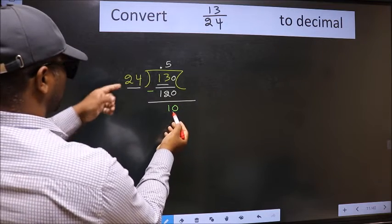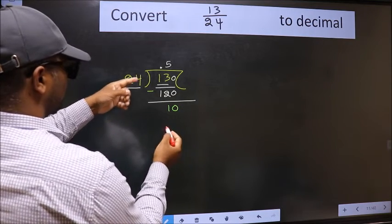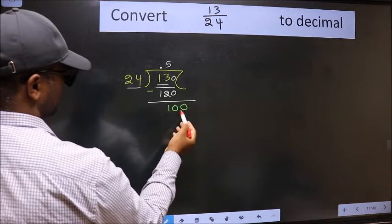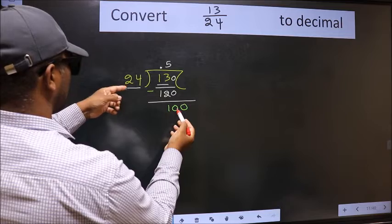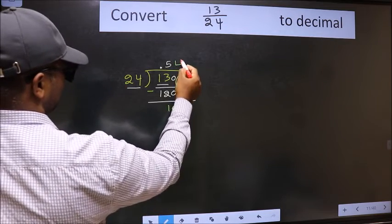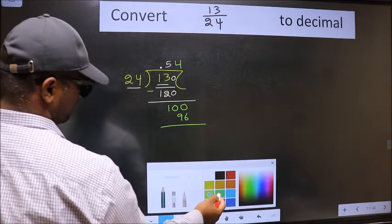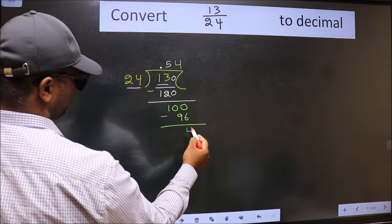10 is smaller than 24 and we already have the decimal, so directly take 0 to make 100. A number close to 100 in the 24 table is 24 times 4 equals 96. Now we should subtract. We get 4.